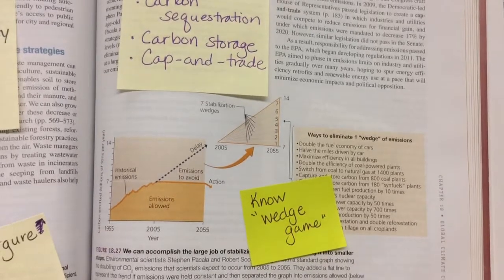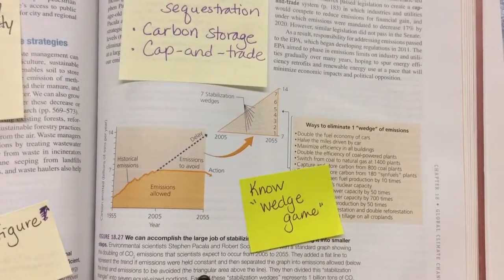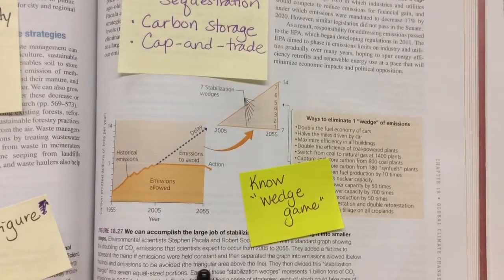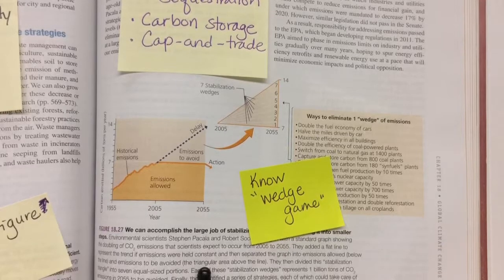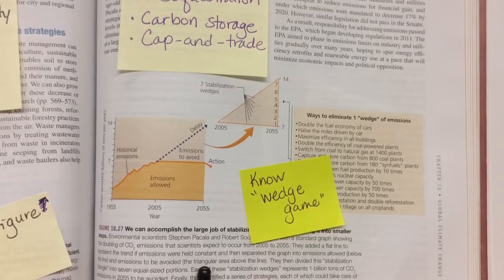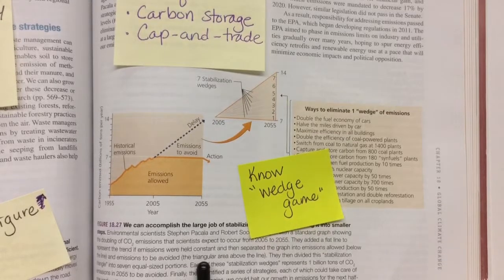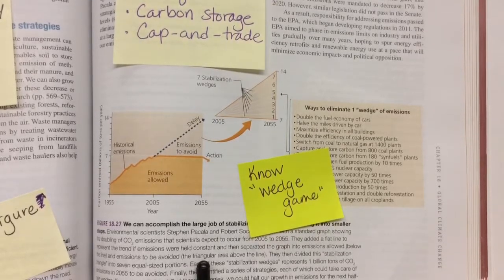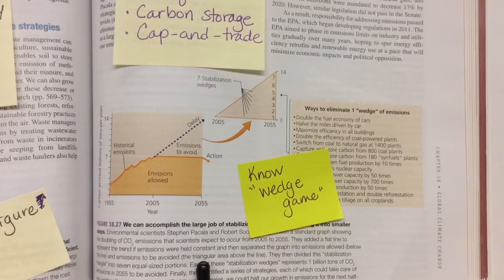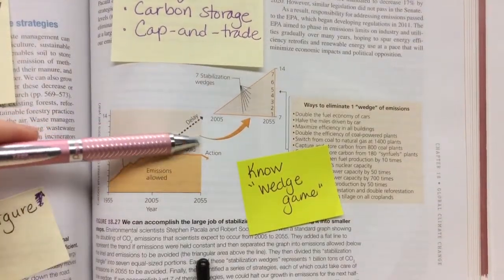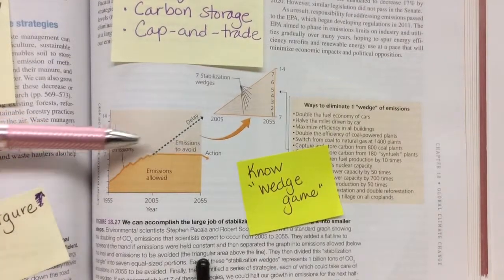Down here we have the wedge game, which is a way to reduce greenhouse gas emissions in different ways. The theory is that we can't just pick one way, like it's all electric cars, or it's all about not burning coal. There are a lot of things that we can do to prevent and lower greenhouse gases.